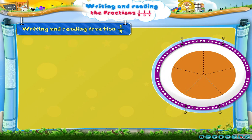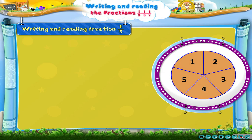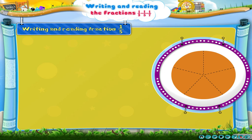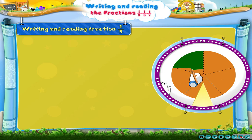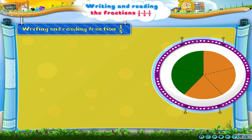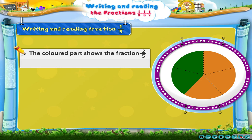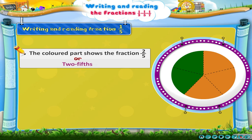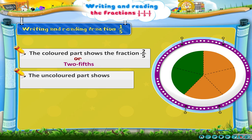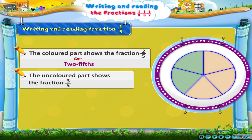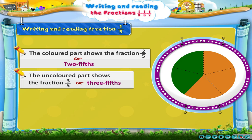Now look at this figure. It has been divided into five equal parts. Let us colour any two parts. The coloured part shows the fraction 2 out of 5, or 2 fifths. The uncoloured part shows the fraction 3 upon 5, or 3 fifths.